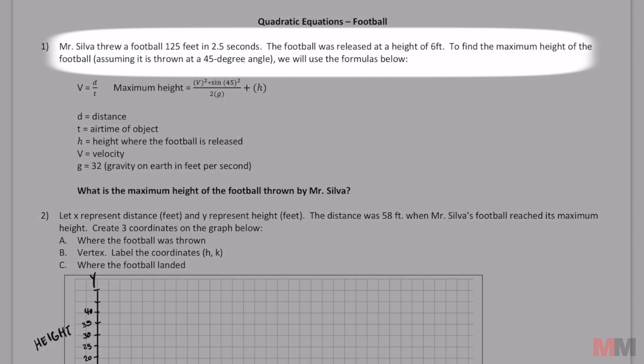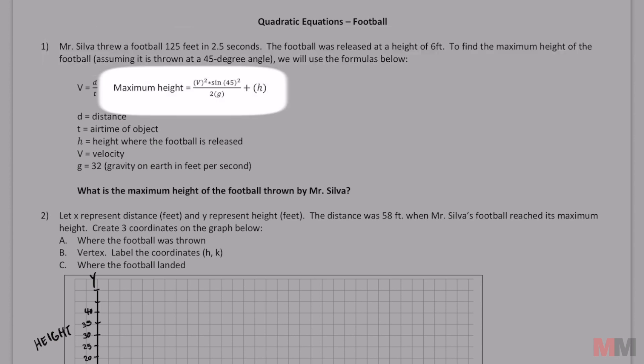Mr. Silva threw a football 125 feet in 2.5 seconds. The football was released at a height of 6 feet. To find the maximum height we're gonna use this formula right here, assuming that I threw it at a 45-degree angle.